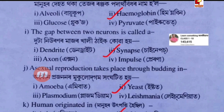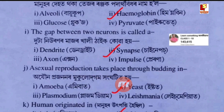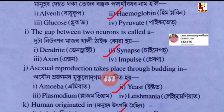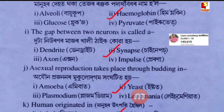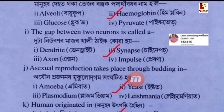Next question: sexual reproduction takes place through budding in which organism? Option A: Amoeba. Option B: Yeast. Option C: Plasmodium. Option D: Leishmania. Answer: Yeast.